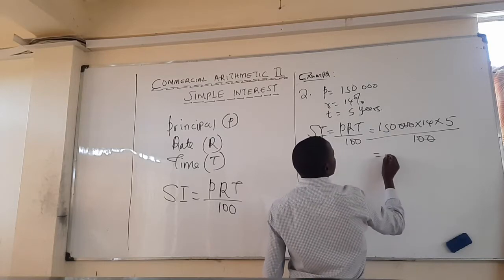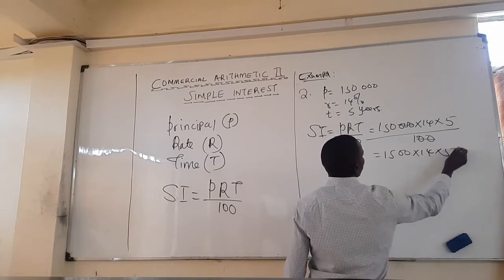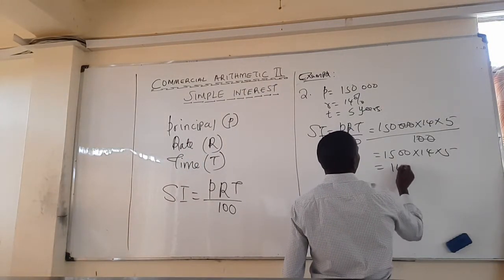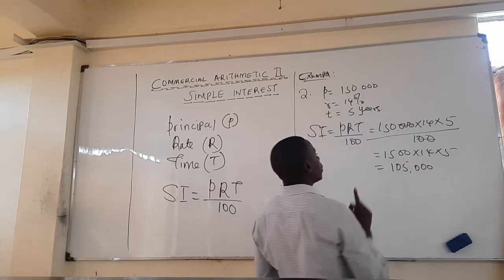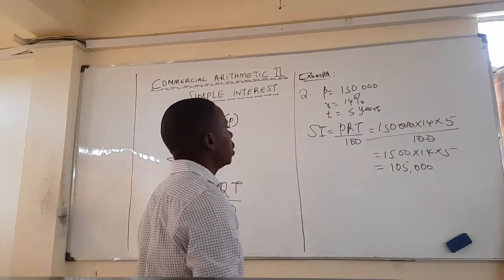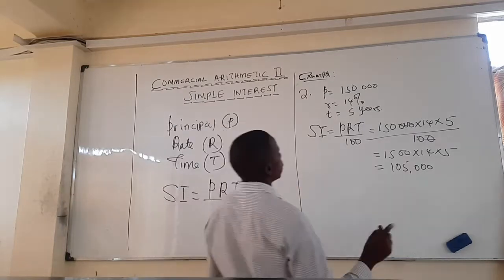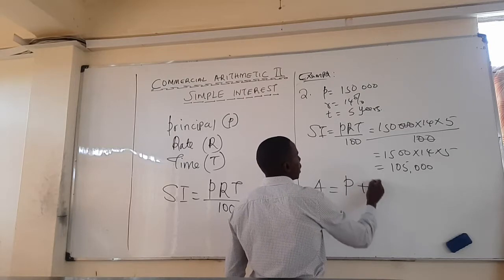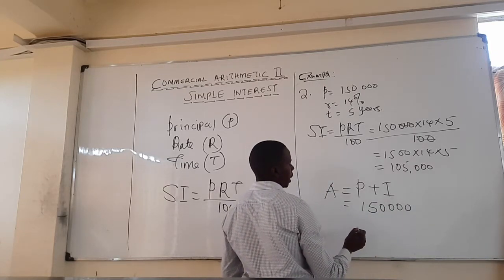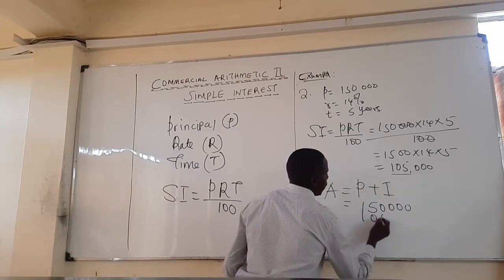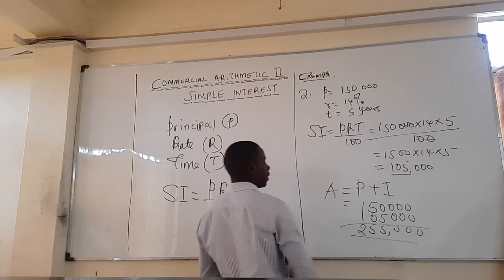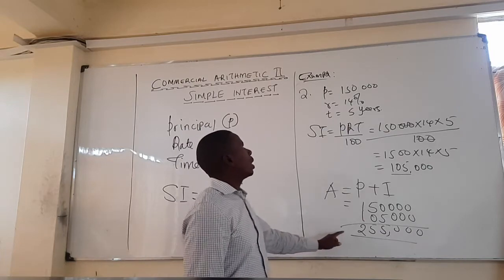We can simplify by cancelling: 1,500 times 14 times 5, which gives us 105,000 as the interest earned by 150,000 at 14% in five years. Now to find the amount: Amount = Principal plus Interest = 150,000 plus 105,000 = 255,000. So the amount at the end of 5 years is 255,000.